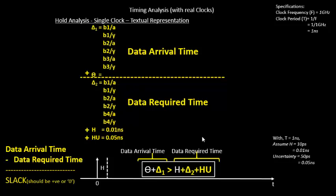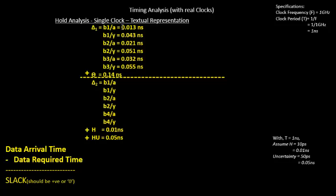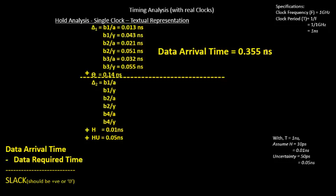Now let's put in some values and calculate the slack. For example, with 13 picoseconds for net delay, 43 for cell delay, and a combinational delay of 140 ps (0.14 ns), the data arrival time comes to 0.355 nanoseconds.